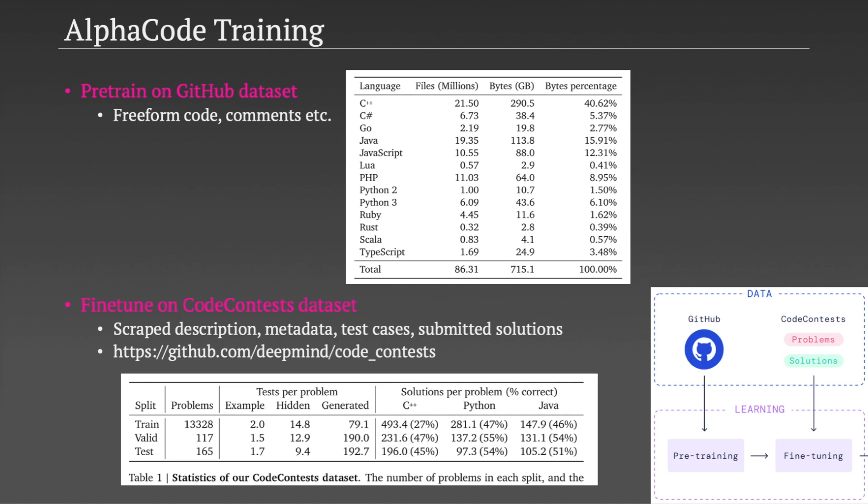The second dataset is much smaller and specific to what AlphaCode is aiming to do, and it's used for fine-tuning. This dataset is scraped from a few coding challenge websites, including from CodeForces, which is the platform they later test on. The dataset contains the problem descriptions, test cases, and human written solutions. Those are the datasets.